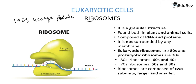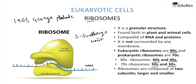In eukaryotes, ribosomes are 80S, further divided into 60S and 40S subunits. In prokaryotes, ribosomes are 70S, divided into 50S and 30S subunits. Here S stands for Svedberg's unit, which is the measure for the size and density of a ribosome. Ribosomes are composed of two subunits — a larger and a smaller subunit — which join with mRNA to translate and synthesize various protein chains. Ribosomes are essentially the site for protein synthesis.